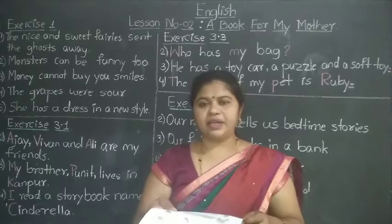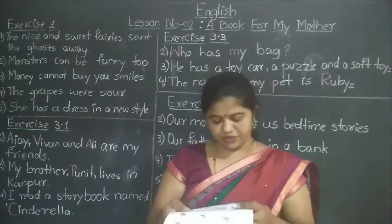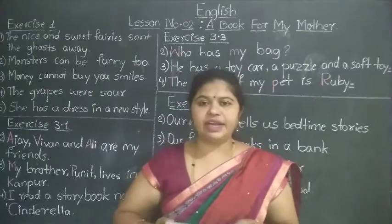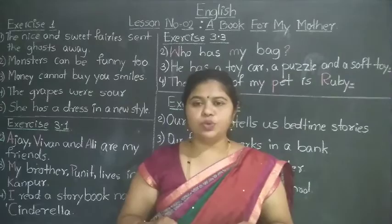Third one — is it a picture of a star? Then write the spelling of star: S-T-A-R. Star. Turn the page, children. Fourth one — is it a picture of rain? Then write the word rain: R-A-I-N. Rain. Fifth one — it's a picture of a moon. Then write the word moon: M-O-O-N. Moon.